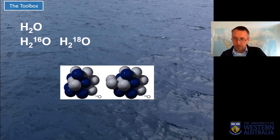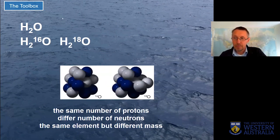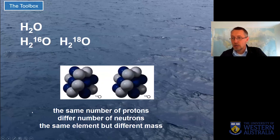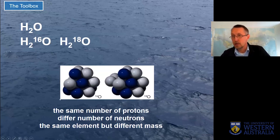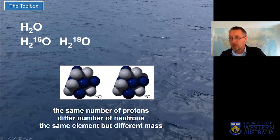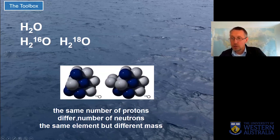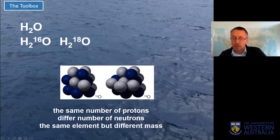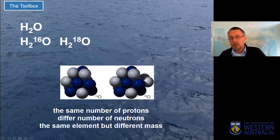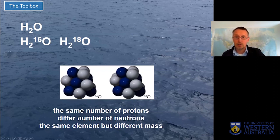So what is the difference? The difference is in the number of neutrons. One isotope will have two fewer neutrons in the nucleus than the other. Still, the number of protons is the same because this is still the same element, but the mass is different. And this causes small differences which are called fractionation.